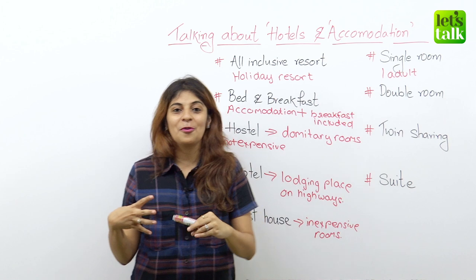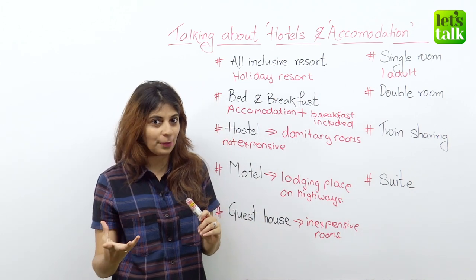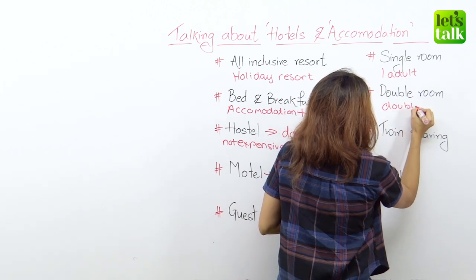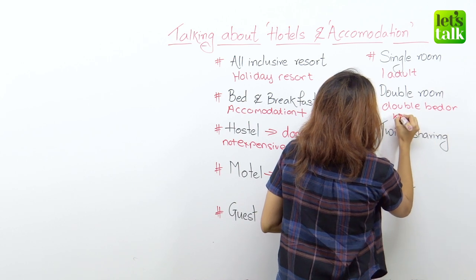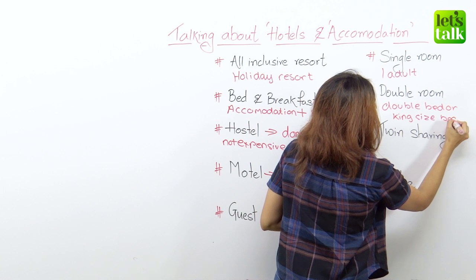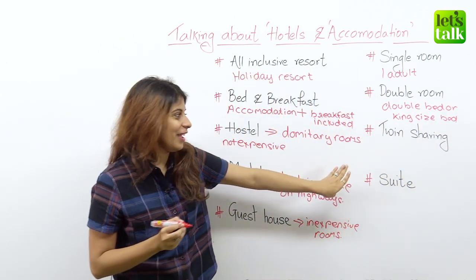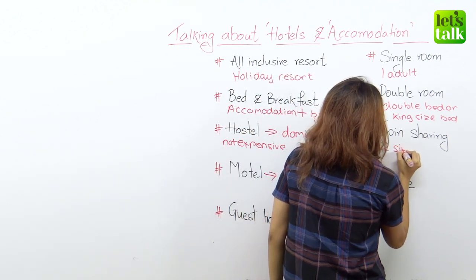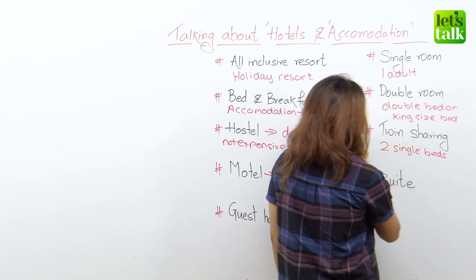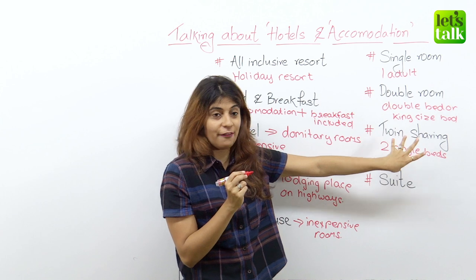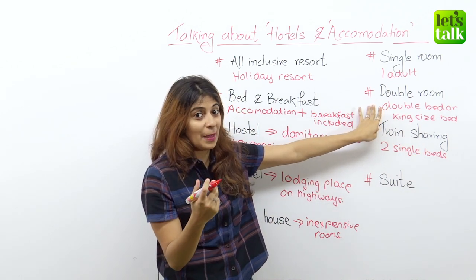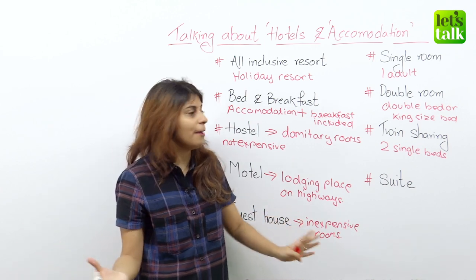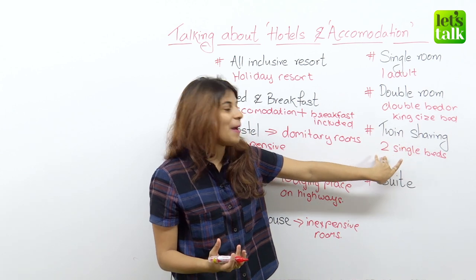Then we have a double room. A double room is for double occupancy, so it's perfect for a couple. It usually has a double bed or a king size bed. The third type of room is twin sharing. Twin sharing is a room with two single beds. Don't get confused between a double room and twin sharing — a double room has a double or king size bed perfect for a couple, whereas twin sharing is for, say, two friends on a trip, with two separate single beds.